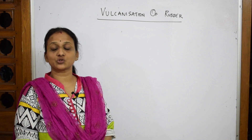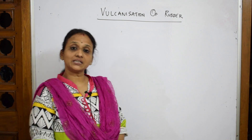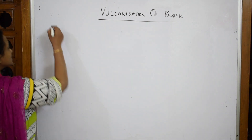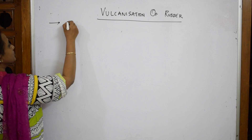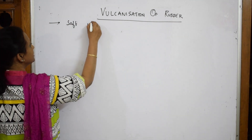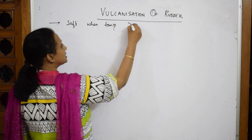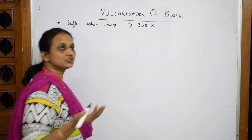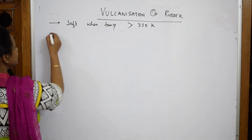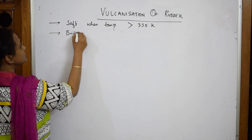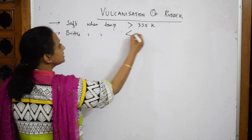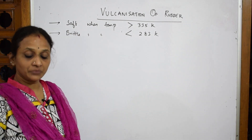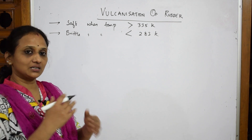Rubber is an elastomer, but its structure is affected by temperature. Rubber becomes soft when temperatures are raised above 335 Kelvin, and it turns brittle when temperatures are less than 283 Kelvin. Both these conditions are problematic, so we need to maintain stiffness in rubber.